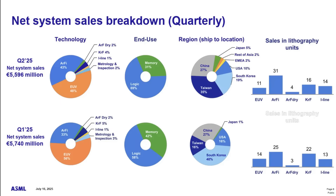Now let's talk about what happened in the quarter. Q1 and Q2 revenue breakdown — starting with the two pie charts on the left. Q1 was $5.7 billion in sales, Q2 nearly $5.6 billion. EUV makes up 48% this most recent quarter, about 56% last quarter. Immersion systems make up the majority of the other portion. Logic equipment makes up the vast majority of end use cases at 69%, with memory at 31%.